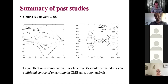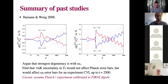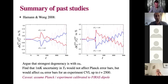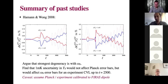This point was taken further by Hamann and Wong in the same year. Here you have similar plots where the solid lines show variations of the power spectra with respect to the CMB monopole temperature, and the dashed lines show the effect of varying omega baryon by a fractional variation four times that of T0. What they argue is that T0 has a strong degeneracy with omega baryon — it has somewhat similar effects. Quantitatively, they find that one milli-Kelvin uncertainty in T0 would not affect Planck error bars significantly, but it could affect error bars on omega baryon significantly if you have an experiment which is cosmic-variance limited up to l of 2500.